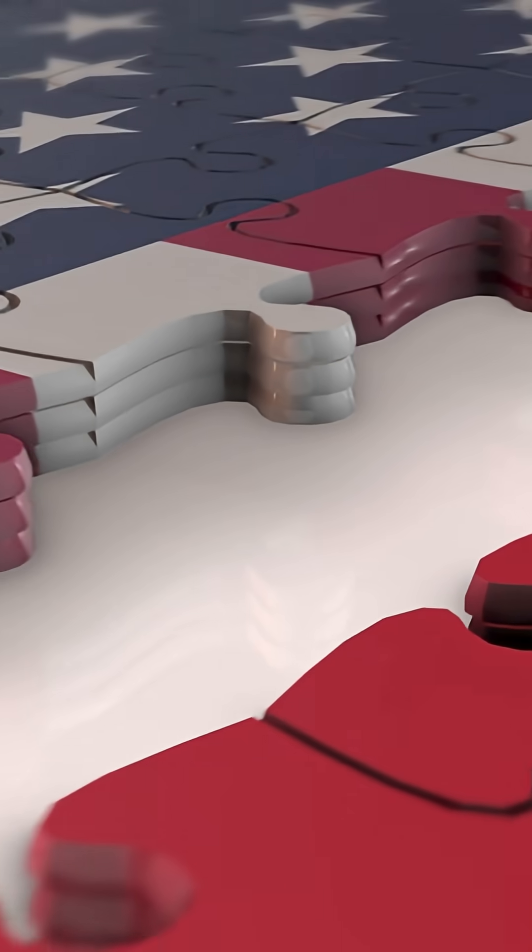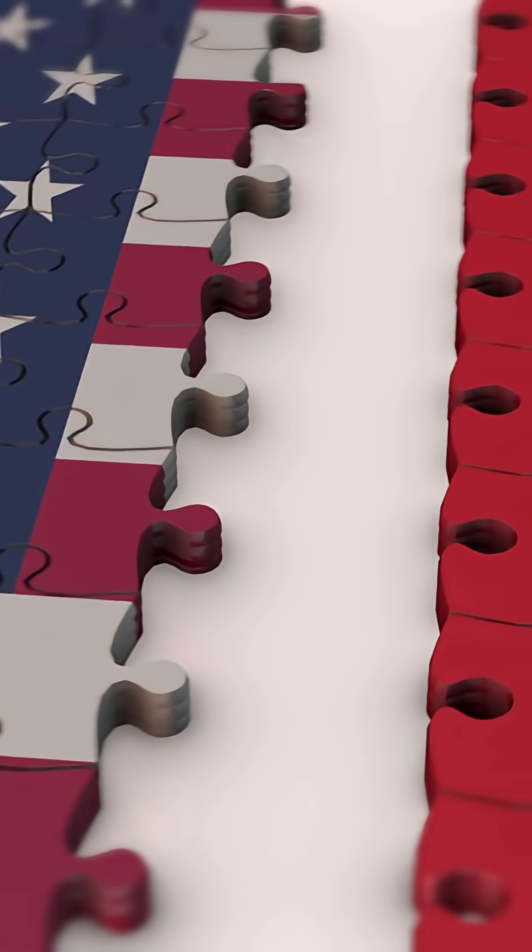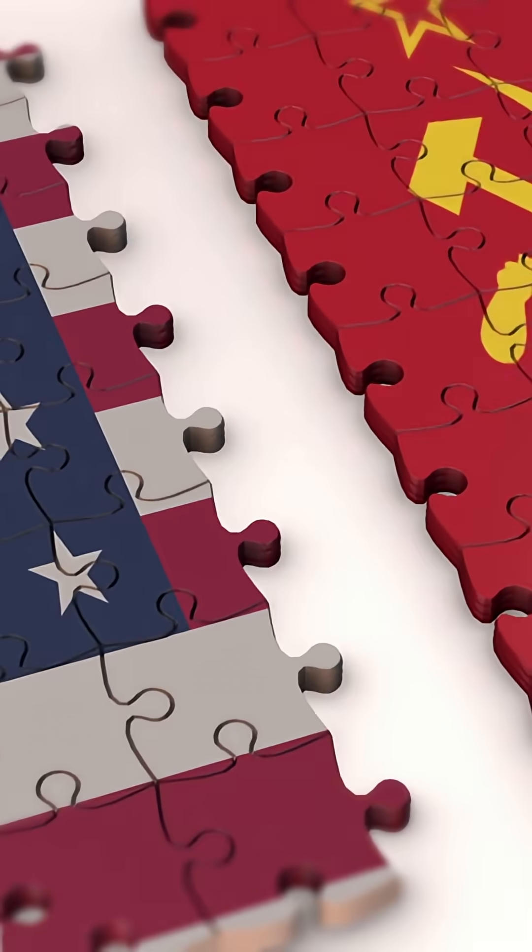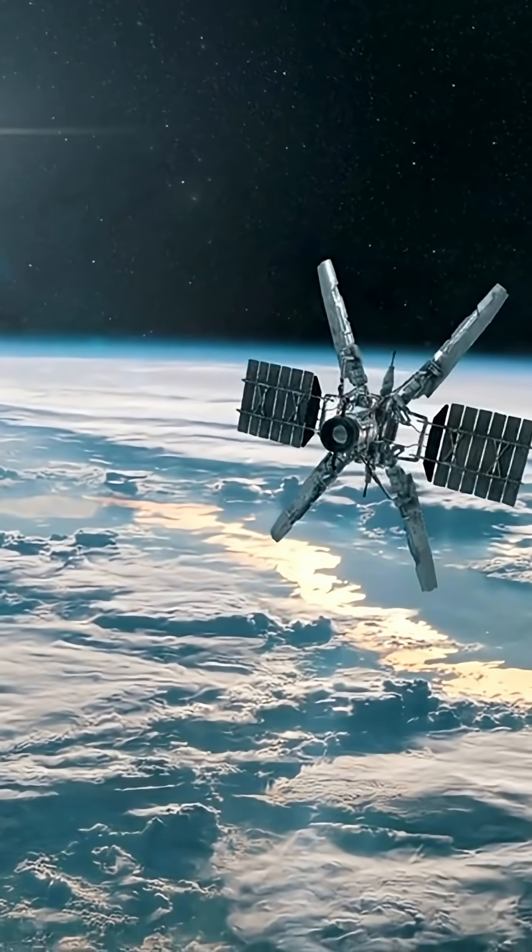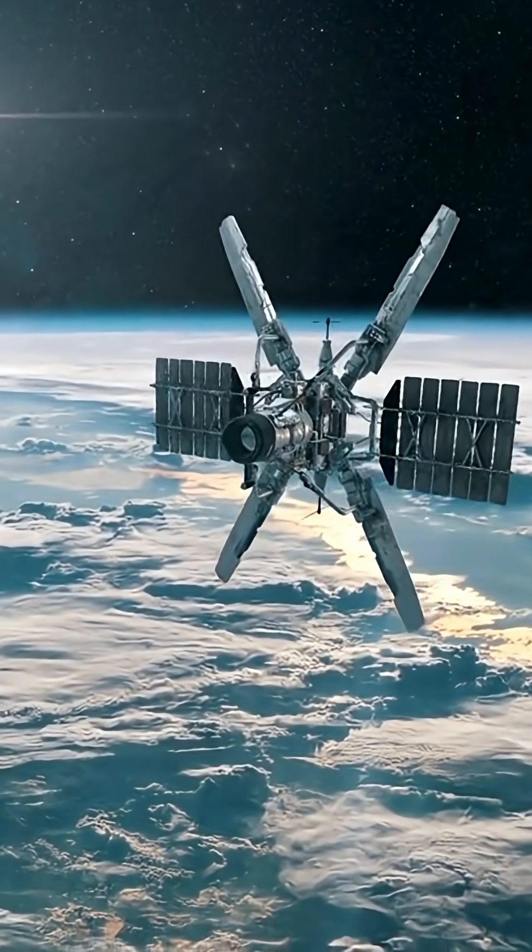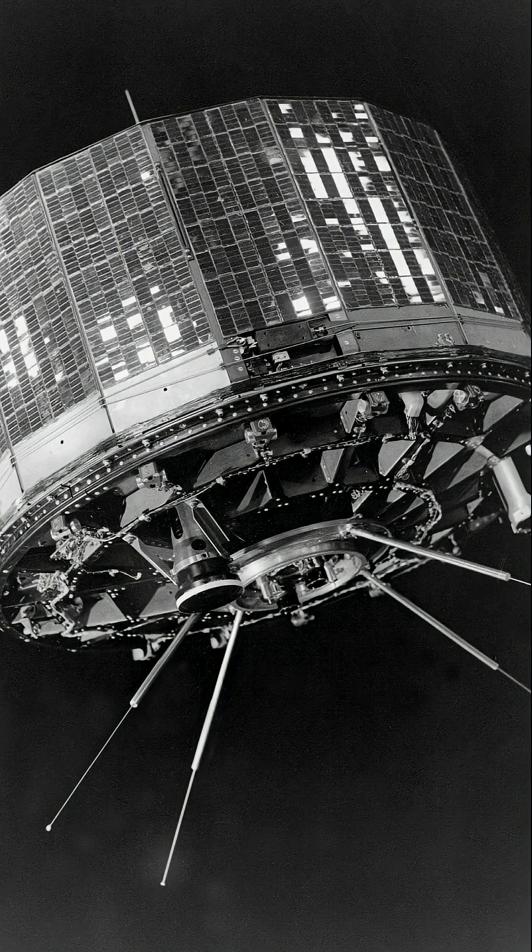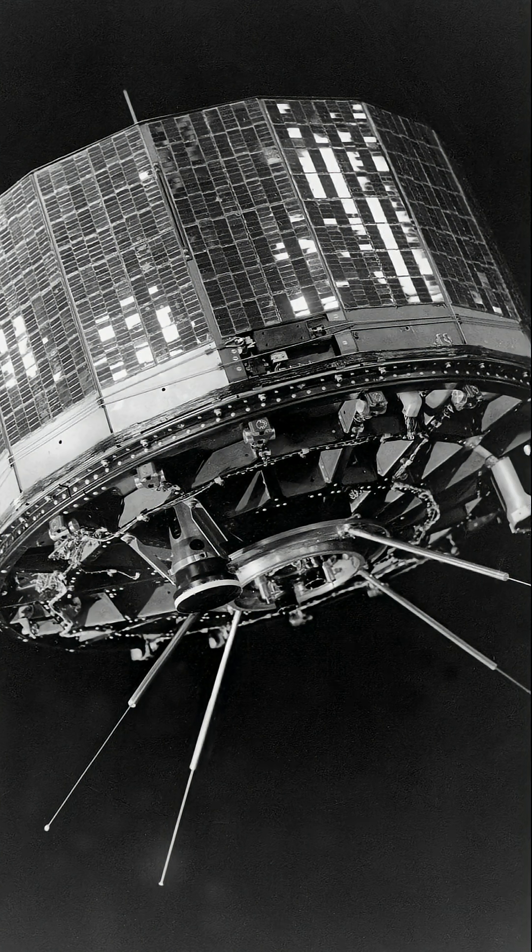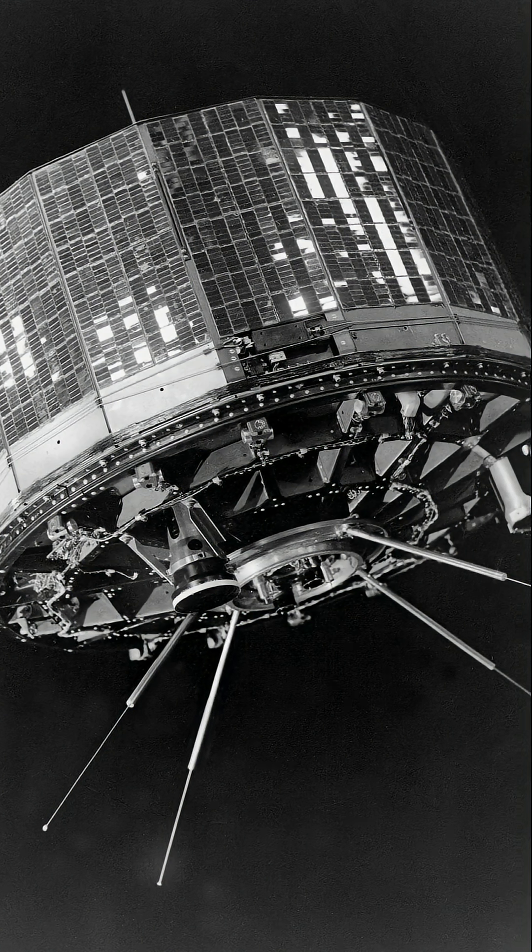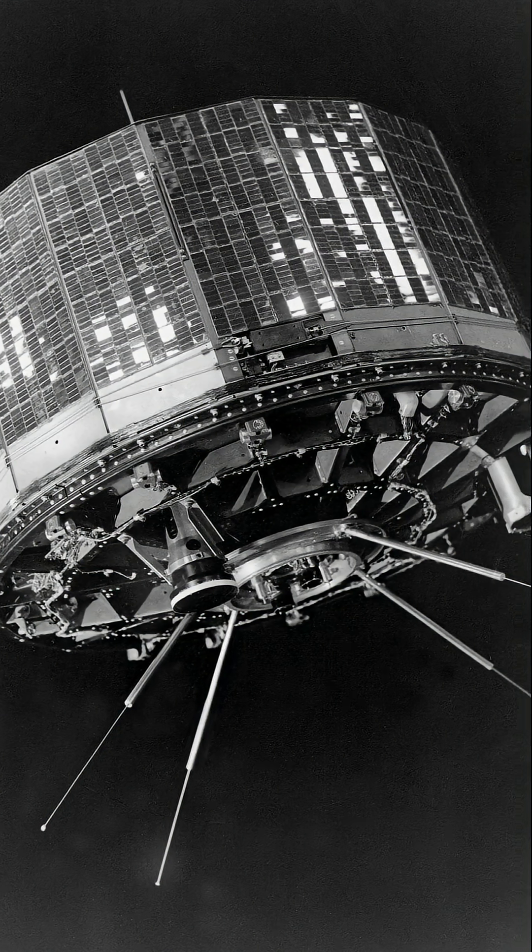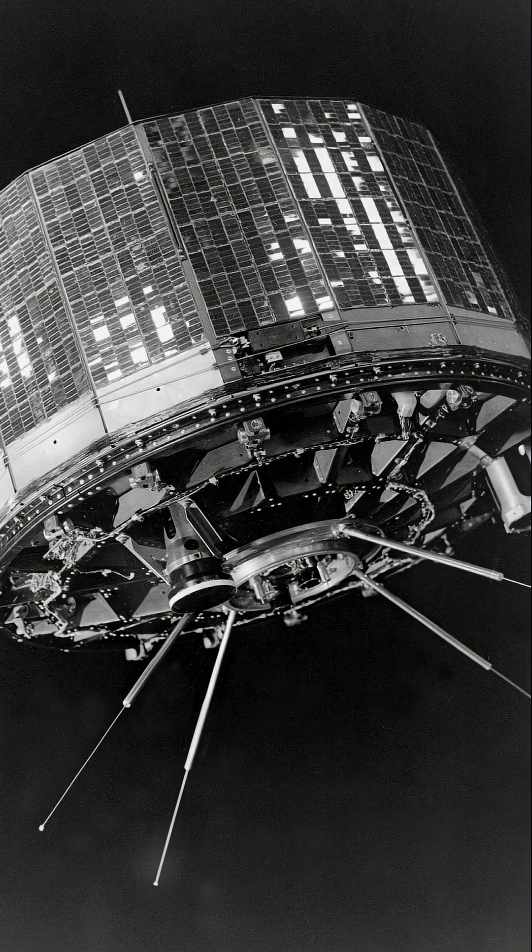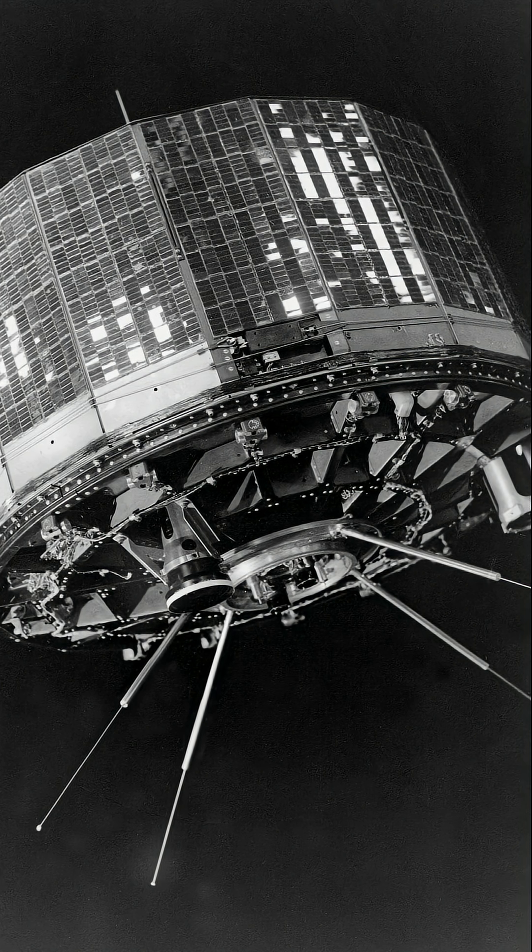The Cold War space race drove innovation, but it also led to a focus on military applications. Satellites were initially used for espionage and communication, but as the technology matured, it began to be used for civilian purposes. The launch of the first weather satellite, TIROS-1, in 1960 marked a significant milestone, enabling scientists to monitor weather patterns and predict storms more accurately.